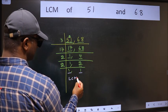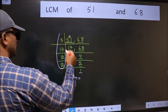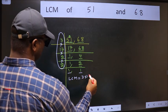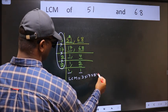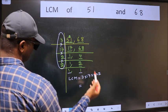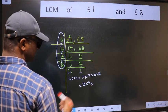So our LCM is the product of these numbers: 3 into 17 into 2 into 2. When we multiply these numbers, we get 204 as our LCM.